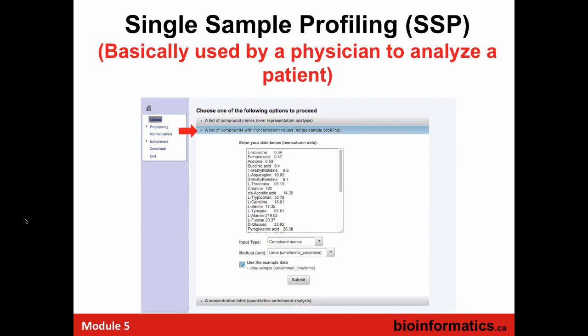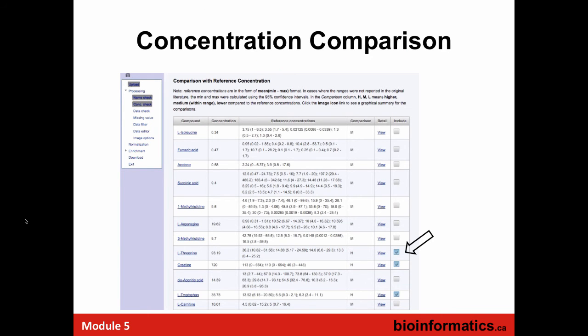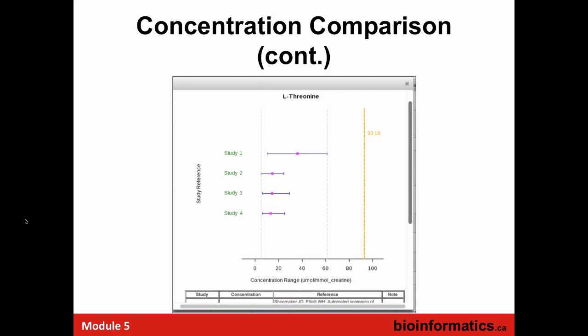The next one is probably more appealing to people — the single sample profiling. This is basically the way that doctors think: what's your readout for glucose — is it above 6 millimolar in blood? Is your creatinine level above X? This is how they make decisions about whether there's diabetes or kidney failure. In this case, it's not just a list of compounds — it's compounds and their concentrations. What we've used with the HMDB is tabulated all normal and abnormal concentrations. It flags things as being abnormally high or abnormally low, looking at the reference concentration range and reporting whether those things are within range or out of range. You can look at different studies, the range typically seen, and where this particular sample is. If it's way off scale, something's wrong.